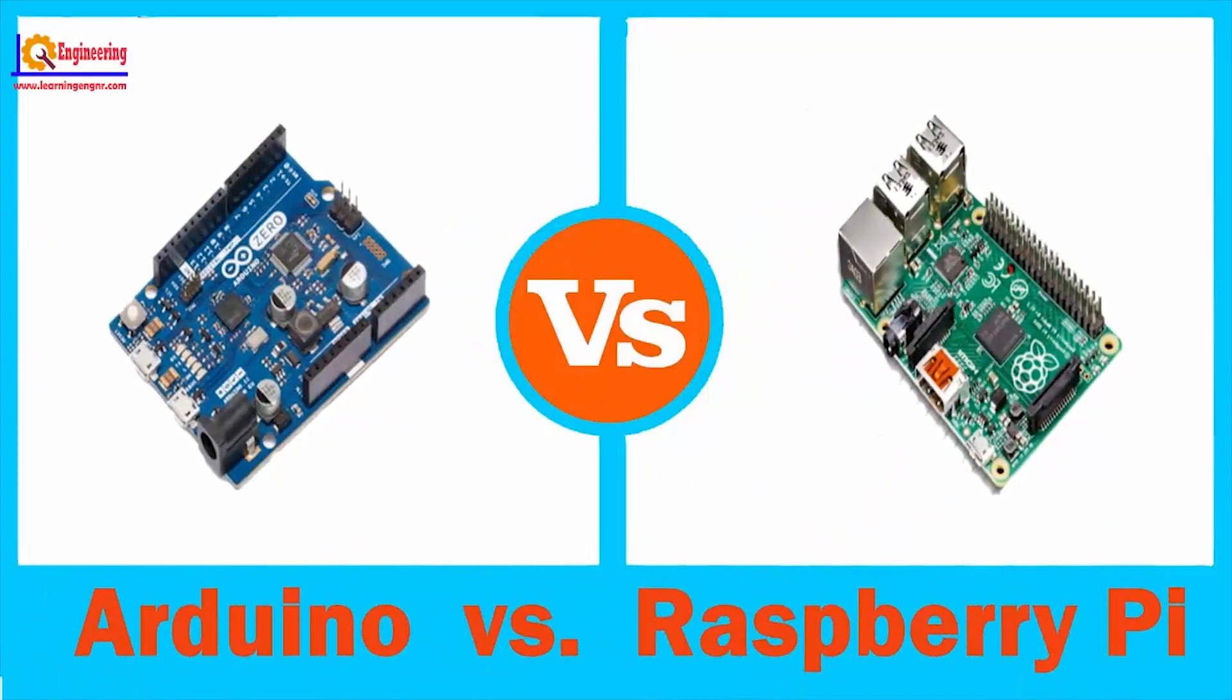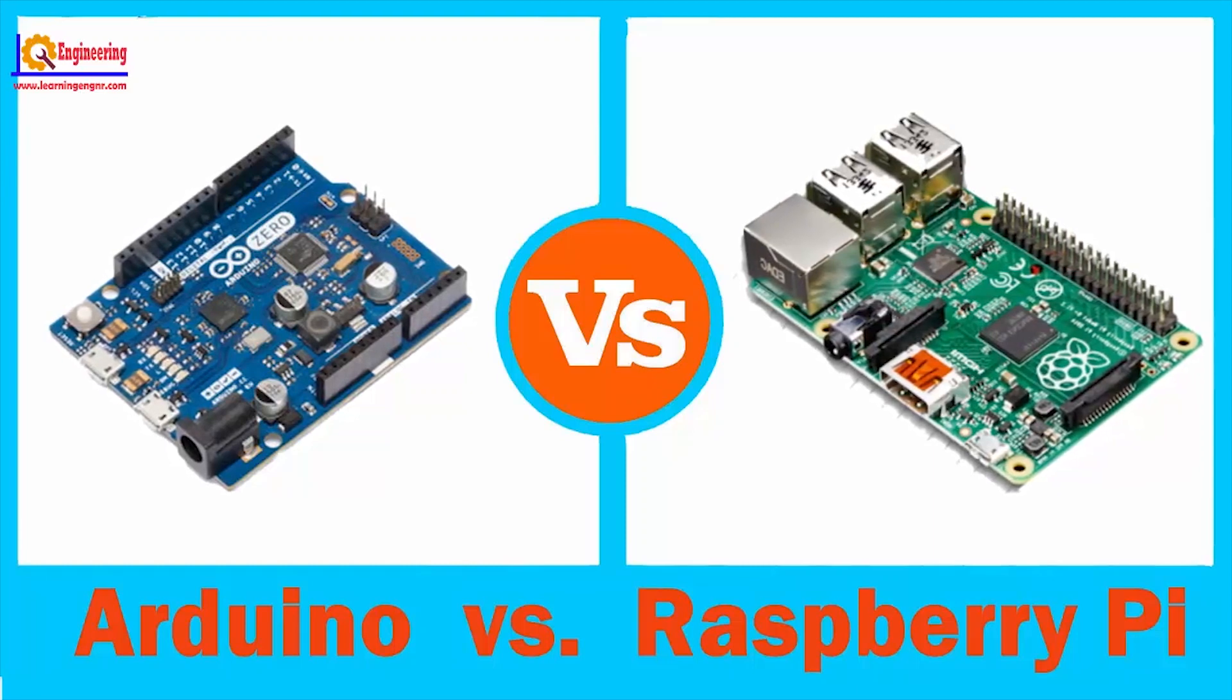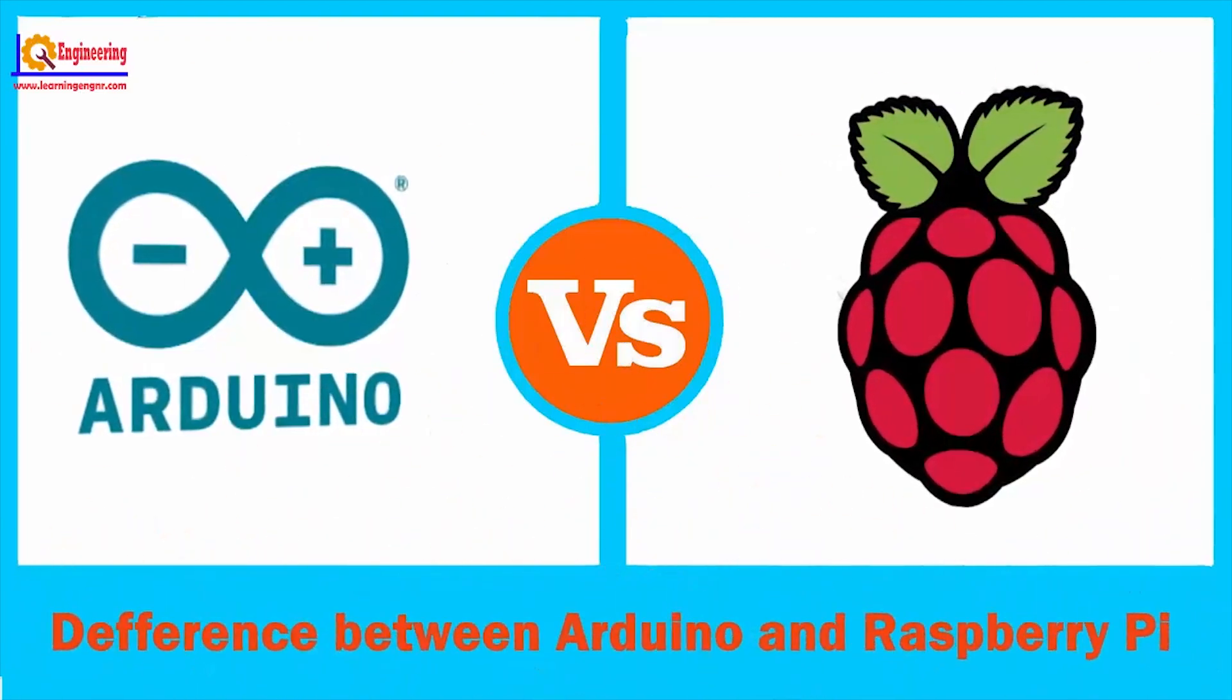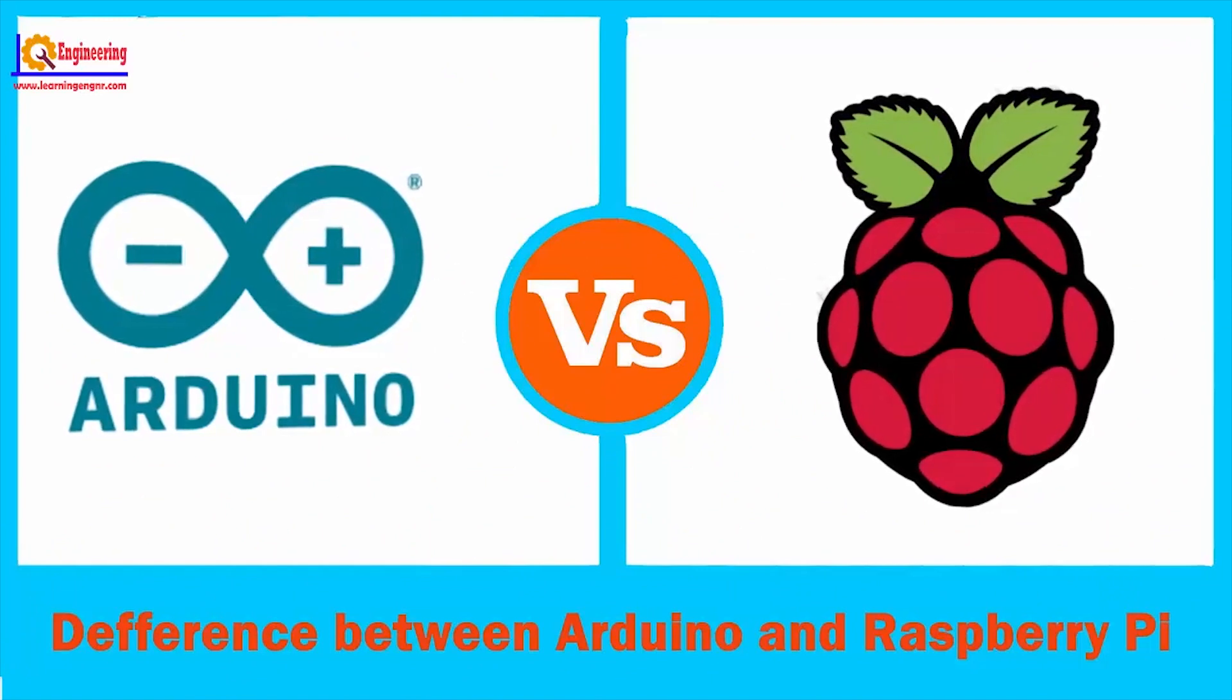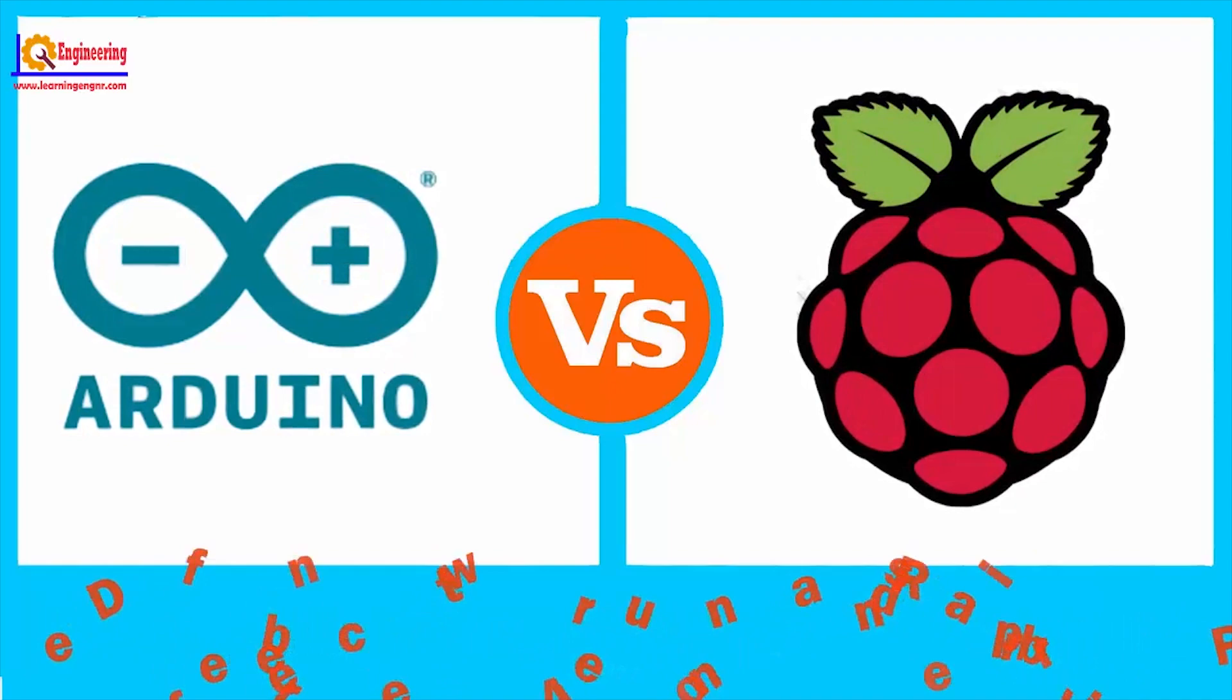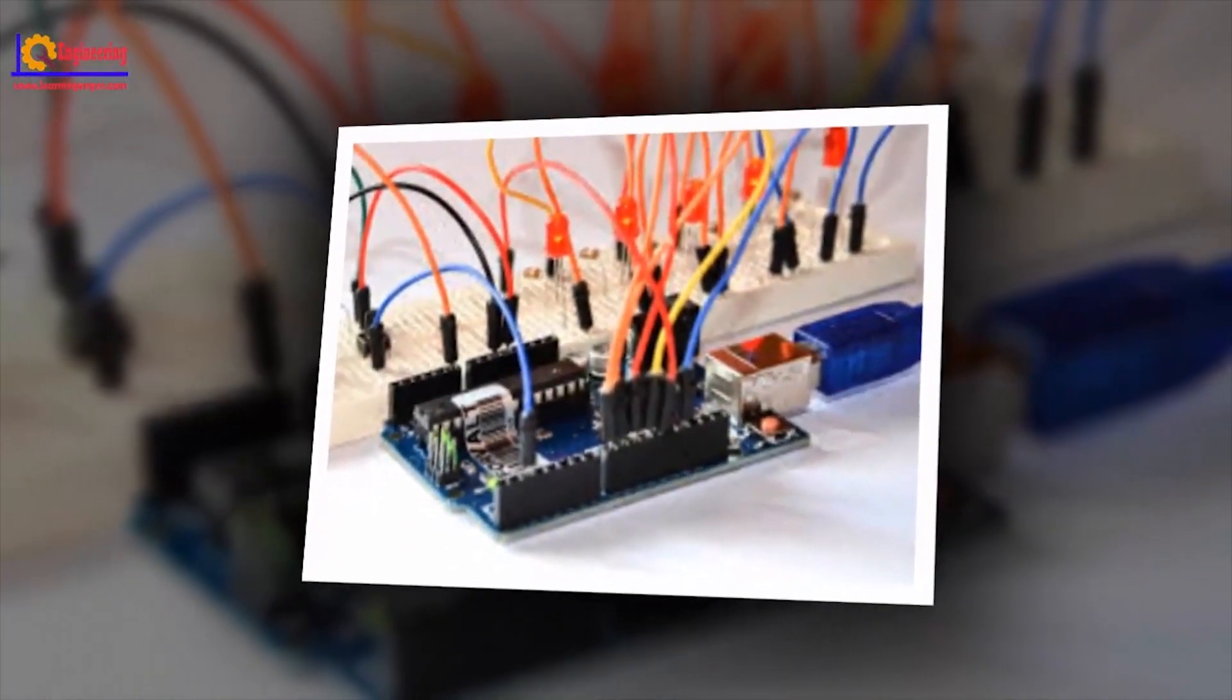Arduino and Raspberry Pi are the most popular devices among engineering students, hobbyists, and professionals. Experienced professionals know the differences and utility between Arduino and Raspberry Pi, but beginners and students are often confused between them.